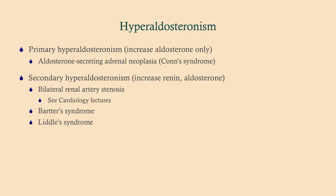Hyperaldosteronism also comes in primary and secondary varieties. Primary means it's made autonomously at the adrenal; secondary means something else is controlling it. The specific condition we're discussing here is an aldosterone-secreting adrenal neoplasia called Conn syndrome. Normally, aldosterone is controlled by the renin-angiotensin-aldosterone system. If you have high aldosterone and low renin, you know something is making aldosterone on its own.